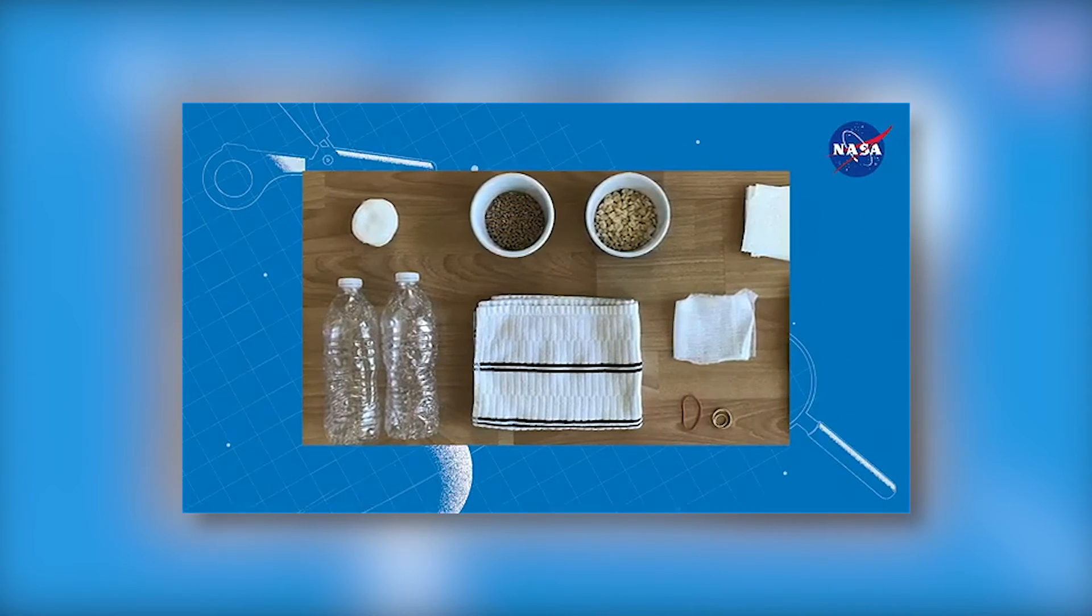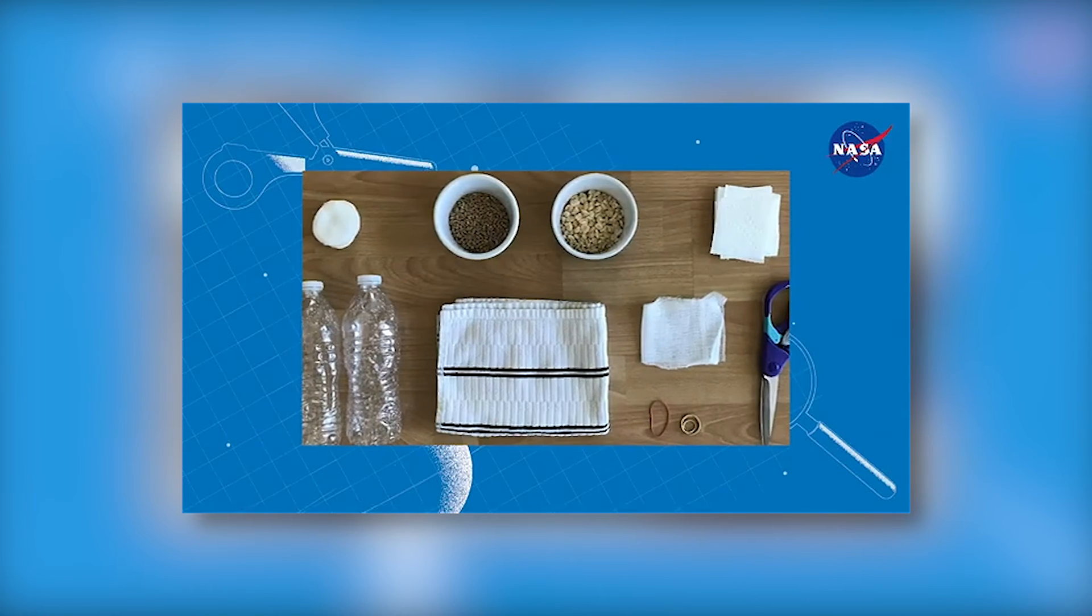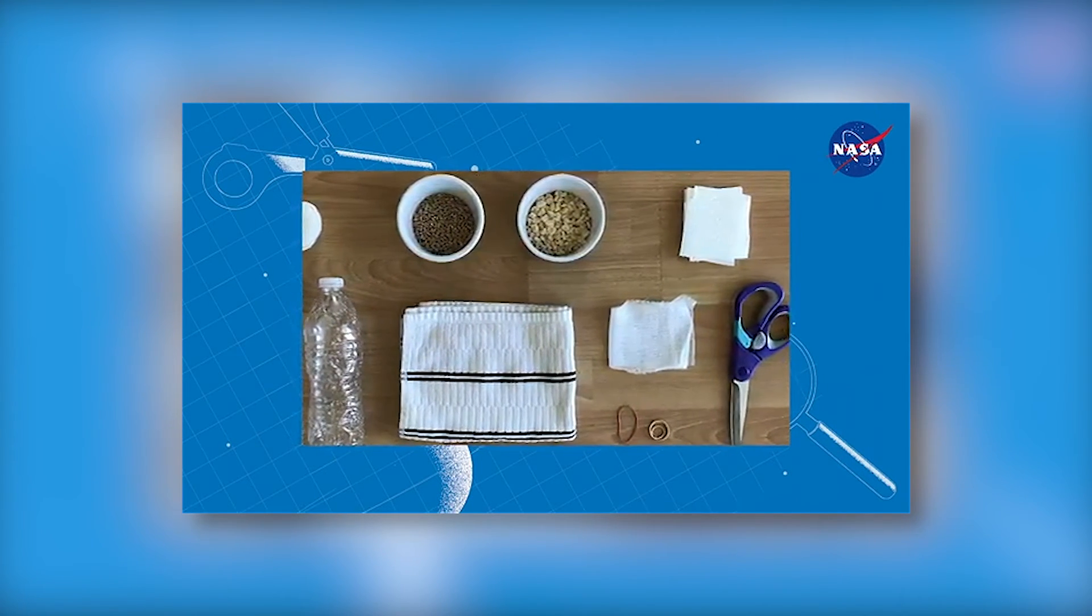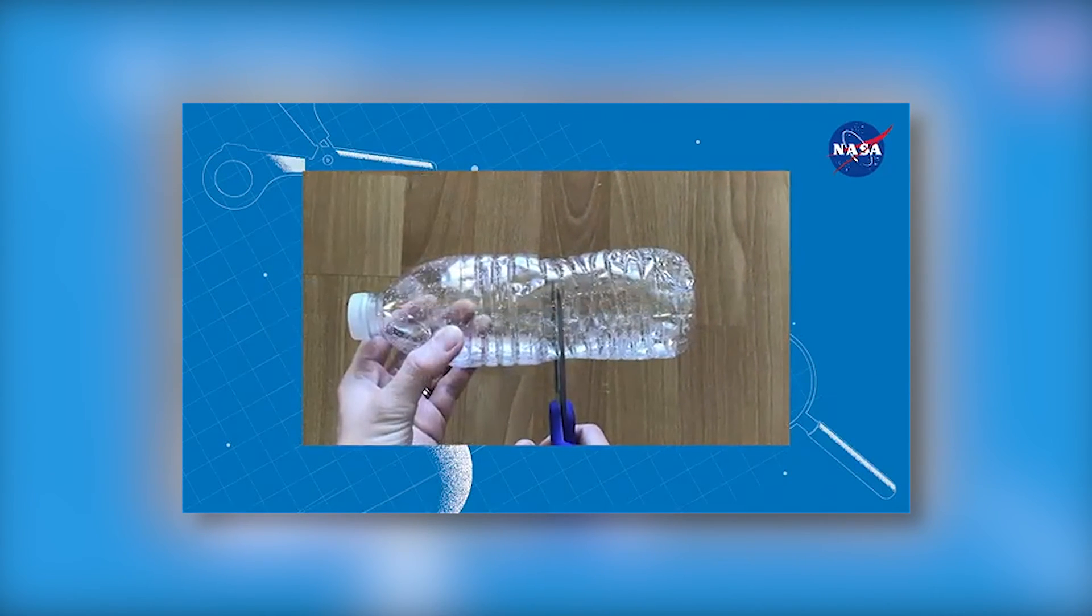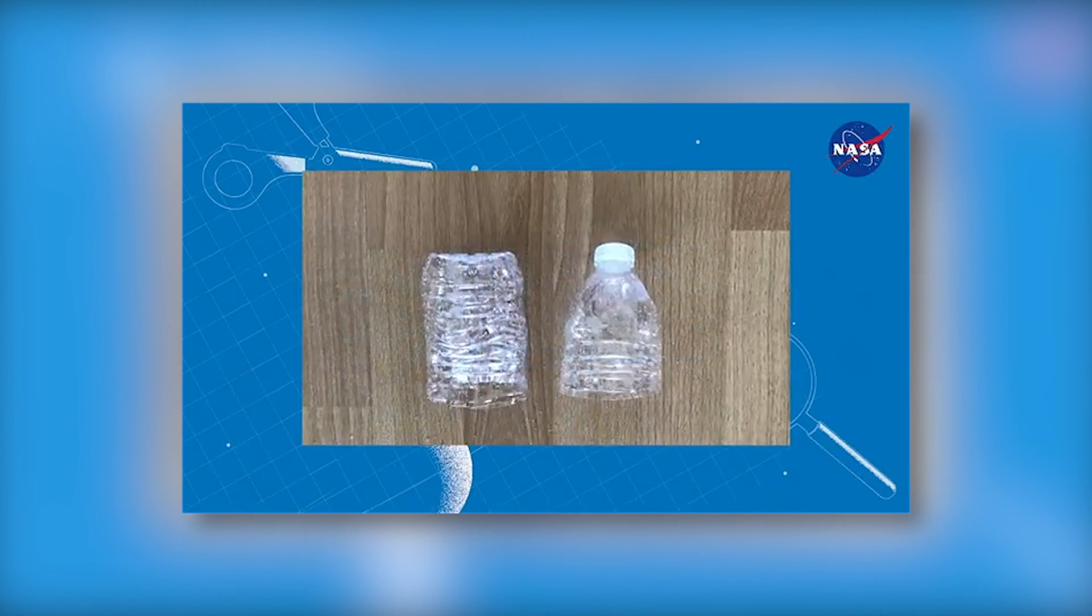To begin, you'll need to gather some materials to act as your filter. You can try conducting your filtration using simple household items like cotton balls, maybe gravel from outside, or macaroni elbows. When I'm building a water filter, I like to start by taking a water bottle and cutting it in half.